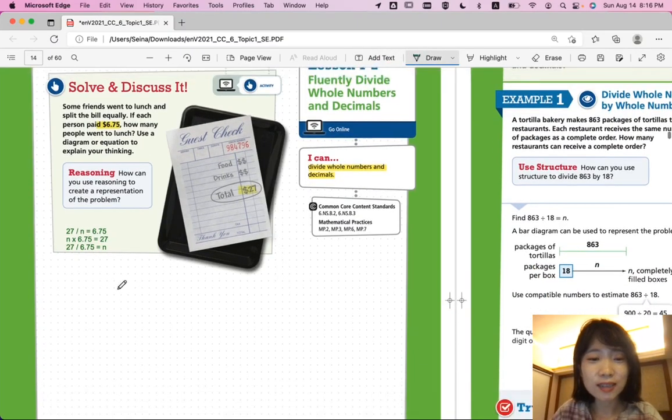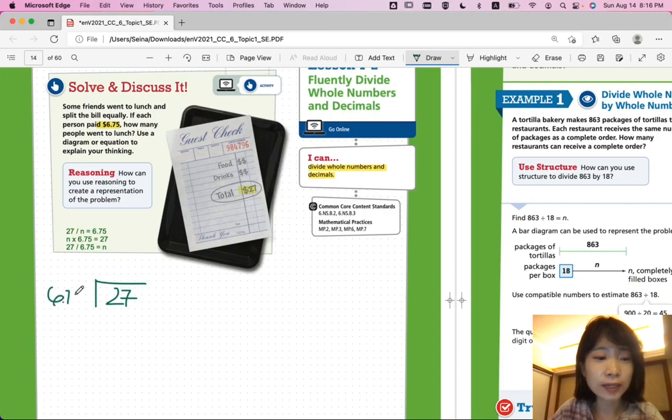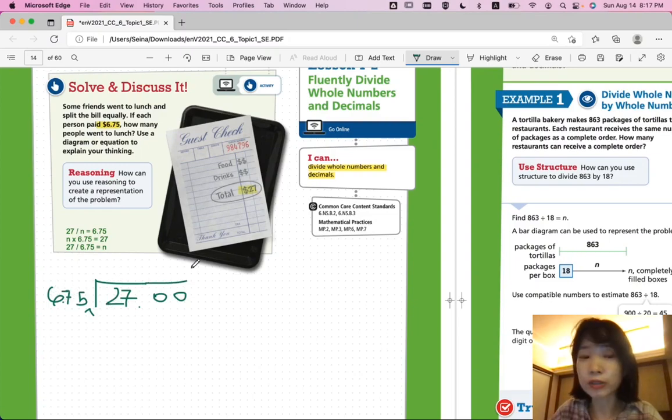You make sure that the decimal place is moved. So, $27 divided by $6.75. You can move the decimal places, two places to the right and say you have zero, zero here. And you can say $6.75 goes into $2,700 exactly four times. $2,700. And you have a remainder of zero.